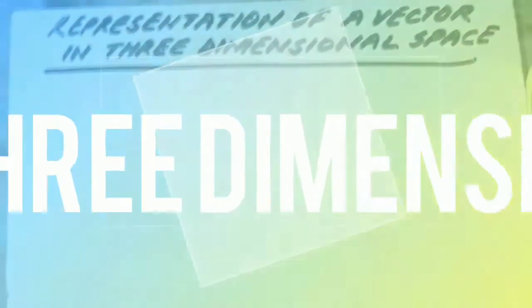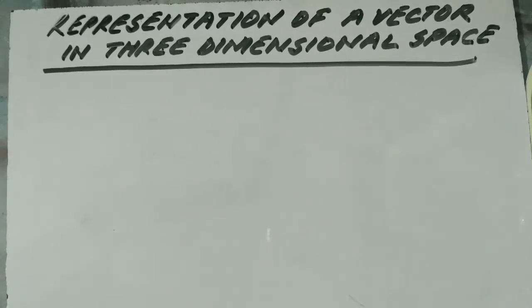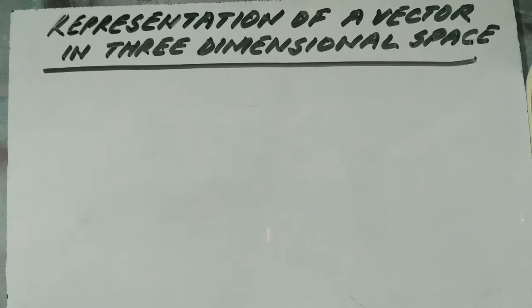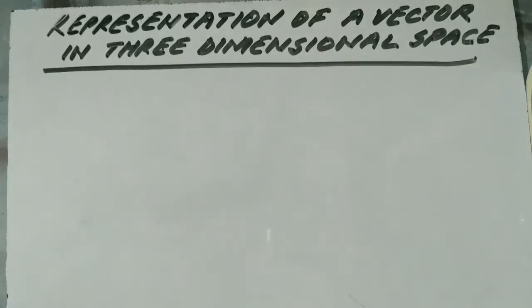Now we will discuss the representation of a vector in three-dimensional space. A vector is represented in three-dimensional space with the help of three mutually perpendicular straight lines, which are known as axes.